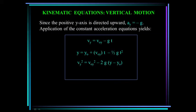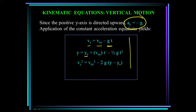The positive y axis is directed upward, so the acceleration in the y direction is minus g. Applying the constant acceleration equations from Section 12.2, we get three equations: the y velocity equals the initial y velocity minus gt; y as a function of time equals the initial position y plus the initial y velocity times time minus one-half gt squared; and the y velocity squared equals the initial y velocity squared minus 2g times (y minus y0).